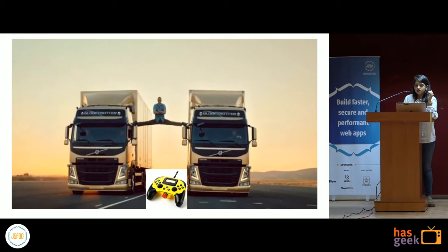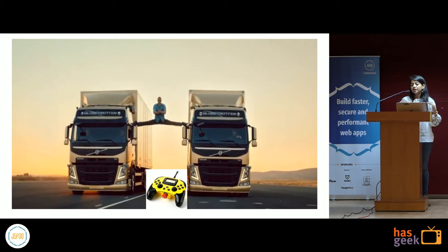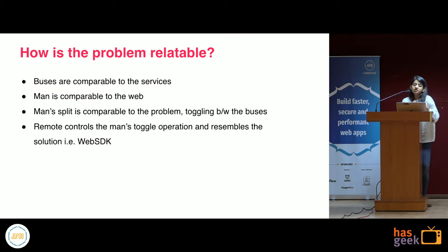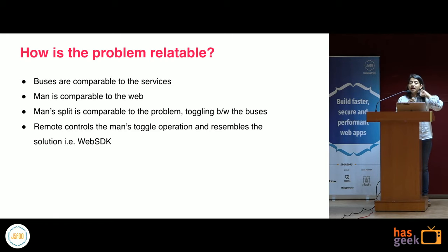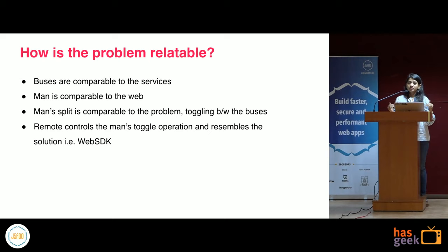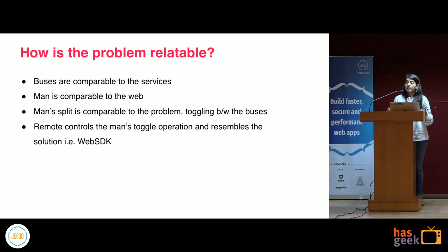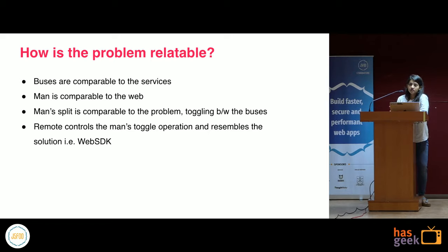In a non-tech world, our problem looks something like this: there's a man performing a split operation between two buses, and this operation is controlled by a remote. The buses resemble the third-party and in-house services; the man is comparable to the web, which is currently dependent on the multiple services for any operation. We wanted to make a remote that could control the dependency of the web on different services for a particular operation.